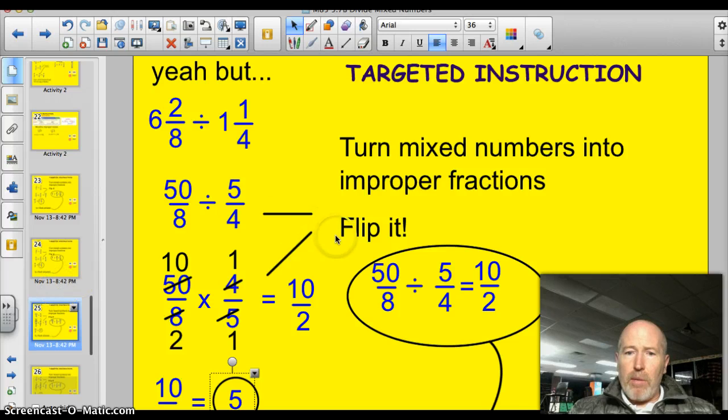There's always a yeah, but. So, here's my yeah, but. Yeah, but what if there's two mixed numbers? This isn't a problem either. Turn them both into improper fractions. So, that's what I've done here. 6 and 2/8 divided by 1 and 1/4. 6 times 8, 48. Plus 2 gives me 50/8. So, I've renamed that as an improper fraction. Same thing here. 1 times 4 is 4. Plus 1 gives me 5/4. So, I have 50/8 divided by 5/4.